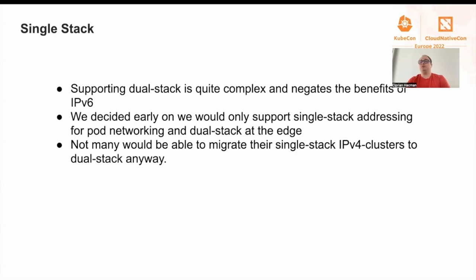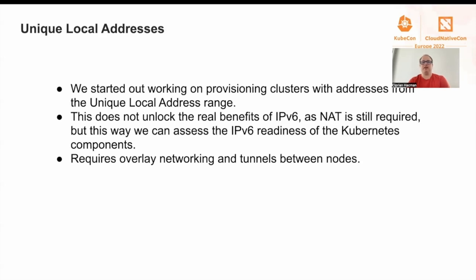Not many would be able to migrate IPv4 single stack clusters to dual stack anyway, due to complexity, risks, and downtime. At the time, instances were only allowed to get single IPv6 addresses, so we decided to use unique local addresses. This does not unlock the real benefits of IPv6 as NAT is still required, but the assessment of Kubernetes readiness can be done. It also requires overlay networking and tunnels between nodes.